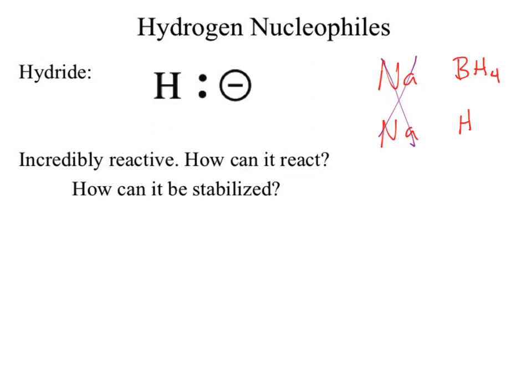Our sodiums are spectator ions — we'll mostly ignore those. Both of these are negatively charged. Sodium hydride is so unstable that the hydride stays attached to the sodium, which means sodium hydride acts exclusively as a base. It can't act as a nucleophile.